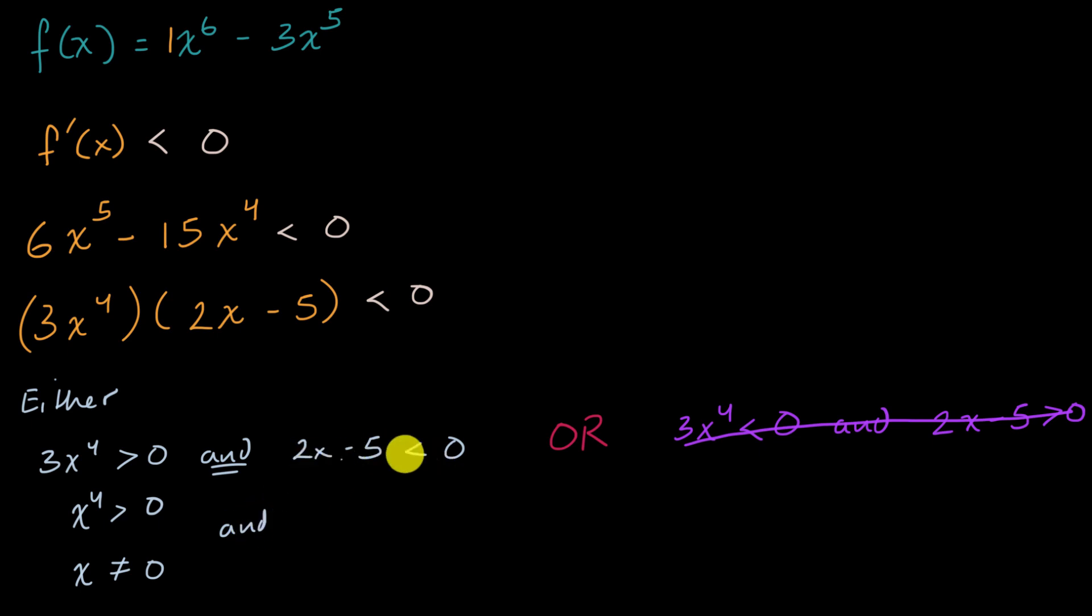And this is a little bit more straightforward. We add five to both sides. We get 2x is less than 5. Divide both sides by two. You get x is less than five halves.